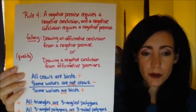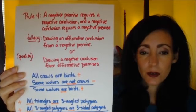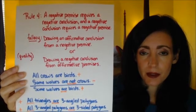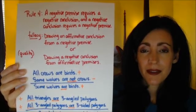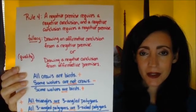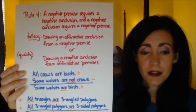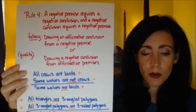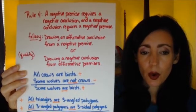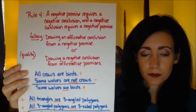Rule number four also deals with quality: a negative premise requires a negative conclusion, and a negative conclusion requires a negative premise. The fallacies committed can be one of two: drawing an affirmative conclusion from a negative premise, or drawing a negative conclusion from affirmative premises.